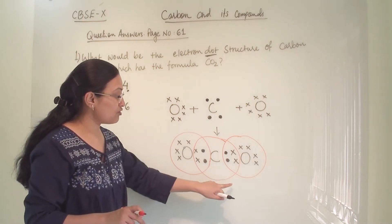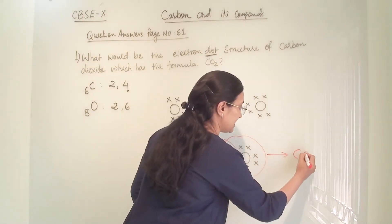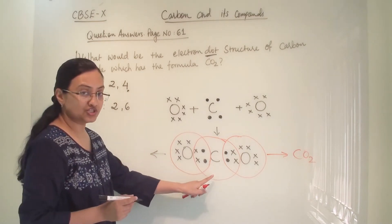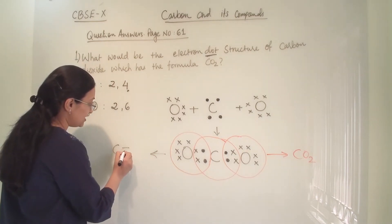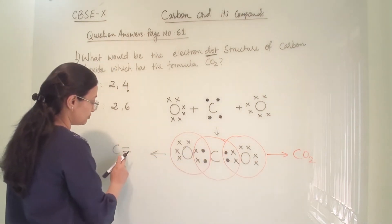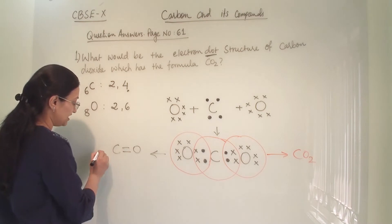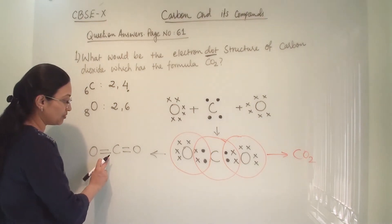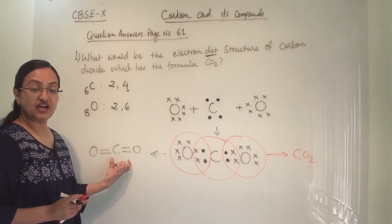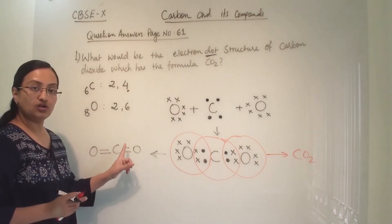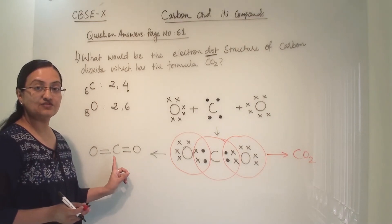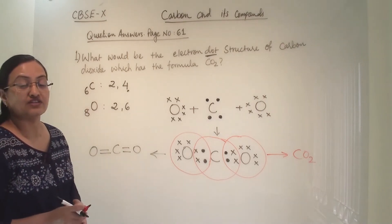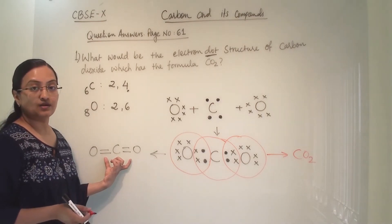So here our electron dot structure of carbon dioxide is completed. This is a molecule of CO2. If we talk about the covalent bonding between oxygen and carbon, carbon is sharing 2 electrons and oxygen is sharing 2 electrons, resulting in a double bond. This double bond occurs on both sides. So carbon is sharing 4 covalent bonds between the 2 oxygens — carbon's tetra valency is satisfied, and each oxygen's valency of 2 is also satisfied.